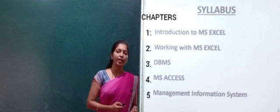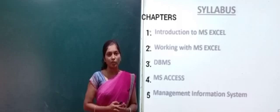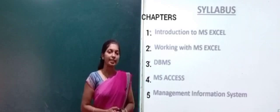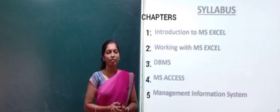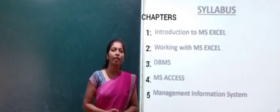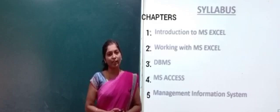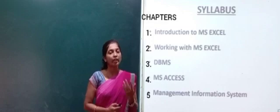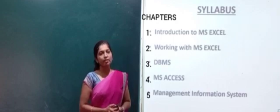Moving to the fourth chapter, that is MS Access — it is also one of the applications of the MS Office package. Here we will be learning what is data, what is information, and what is exactly the difference between data and information. We will be learning how to open an MS Access window, what are the different parts of the MS Access window, how to create a form, how to create a report, how to do queries, how to create tables, what are fields — so many things we will be learning in MS Access.